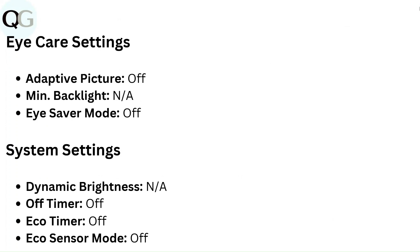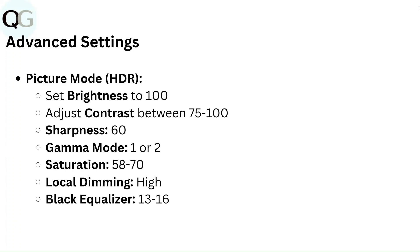Advanced Settings — Picture Mode HDR: Set Brightness 200, adjust Contrast between 75–100, Sharpness 60, Gamma Mode 1 or 2, Saturation 58–70, Local Dimming High, Black Equalizer 13–16.